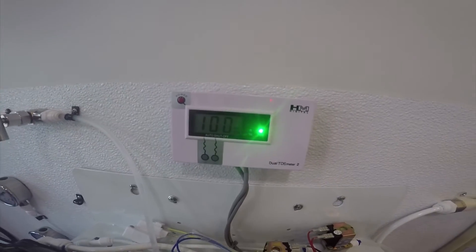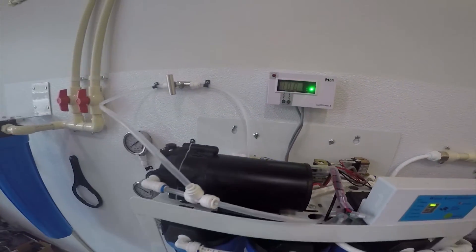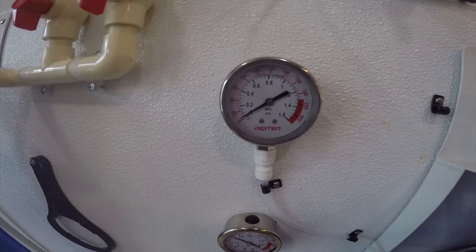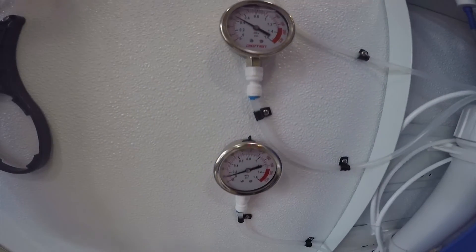So there we go. This is going to make sure our water is perfect. Then we have a couple gauges here. We can check our osmotic pressure differentials and check on the system.